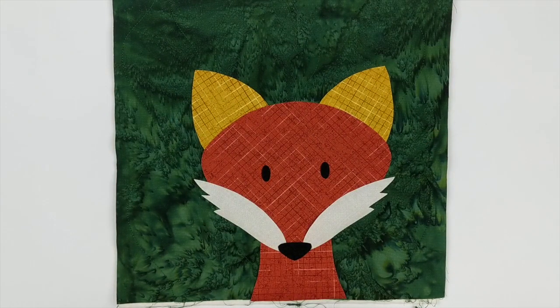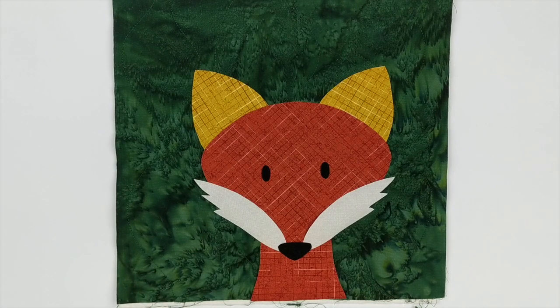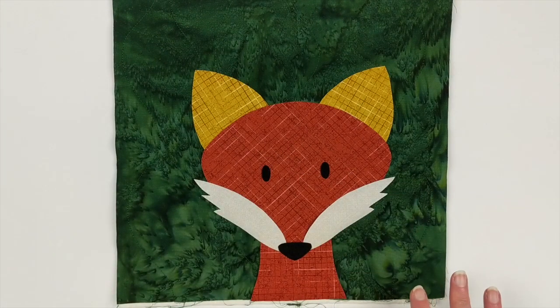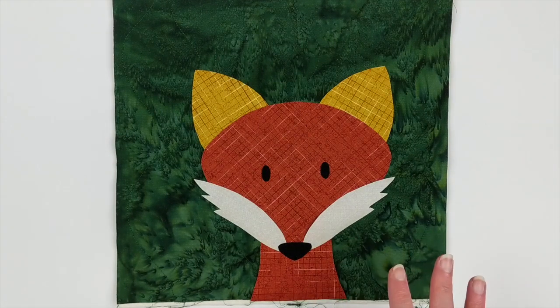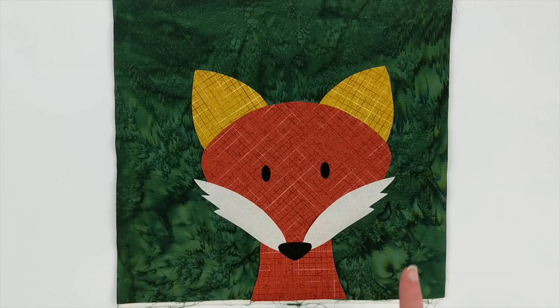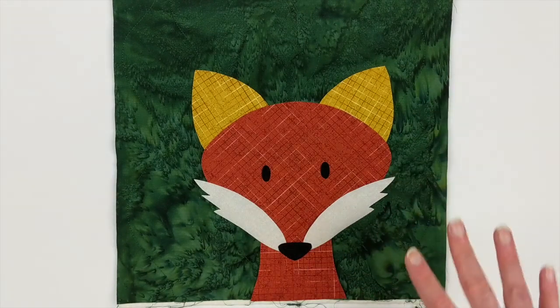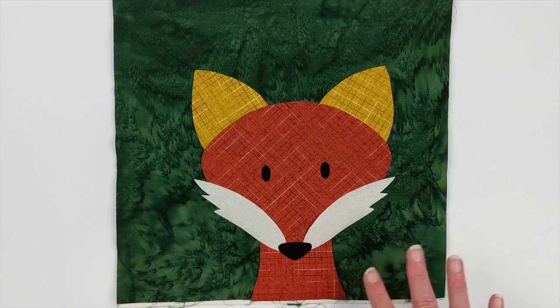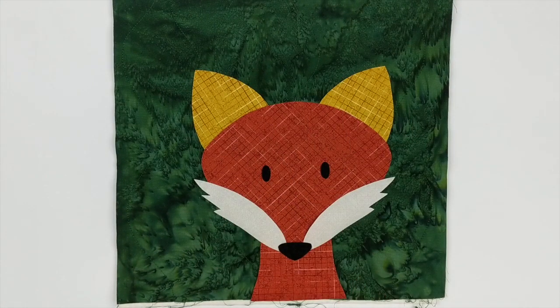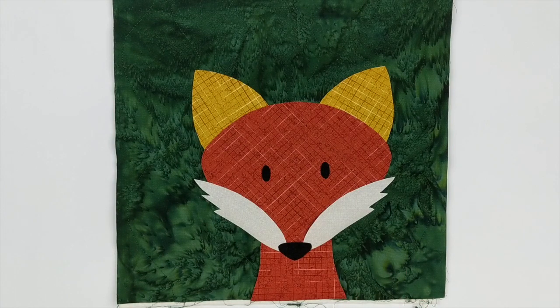Now, once I'm happy with the placement of everything, I'm going to take it over to the ironing board and fuse that down. Again, make sure you follow the instructions on whatever brand of adhesive you're using. And the next step is to outline around all the pieces. So when I bring it back, I'll have it all fused down and I'll have it all outlined. And I'm going to show you the order in which I do all the outlining to minimize any stopping and starting.